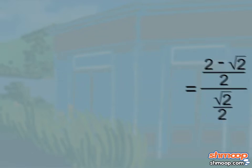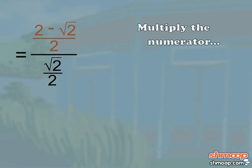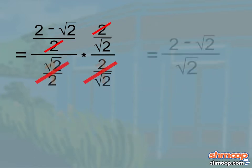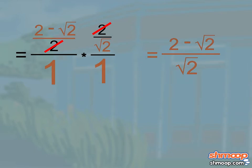We hate fractions in the denominator with a passion. So let's multiply the numerator two minus root two over two by the reciprocal of the denominator to get rid of it. Just like that. The two in the numerator and denominator cancel out. So we're left with two minus root two divided by root two, a piece of cake.